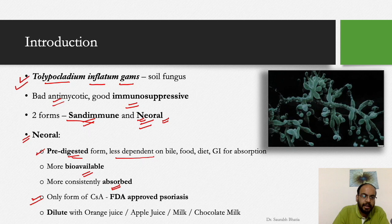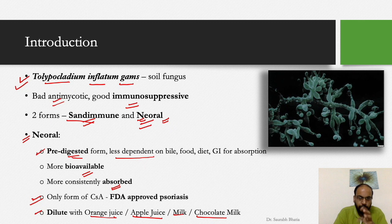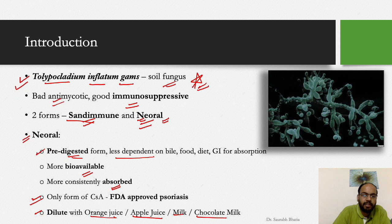The oral solution can be diluted with orange juice, apple juice, milk, or chocolate milk — these four diluents are mentioned in various books. Remember that cyclosporine is isolated from Tolypocladium inflatum GAMS, a soil fungus — a good quiz question — and that the two forms are Sandimmune and Neoral, with Neoral having the properties described.